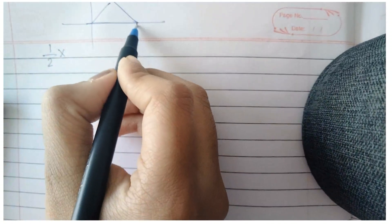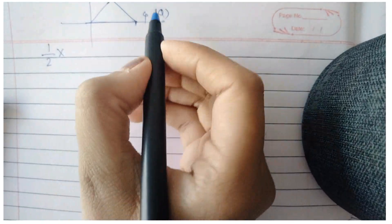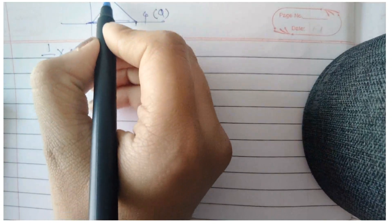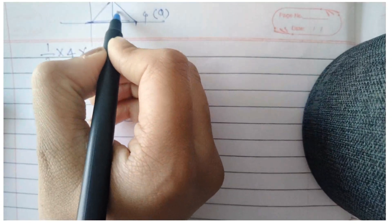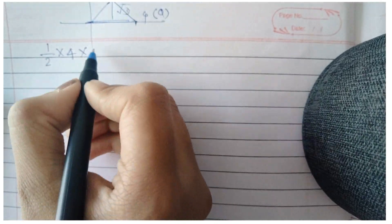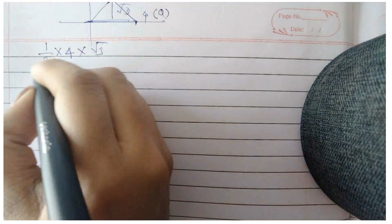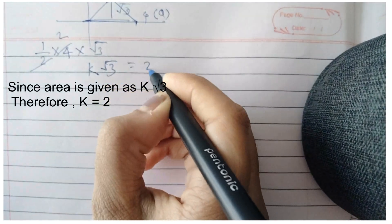The base is 4 units (point Q), and the height is the y-coordinate of point P, which is √3. So the area equals ½ × 4 × √3 = 2√3.